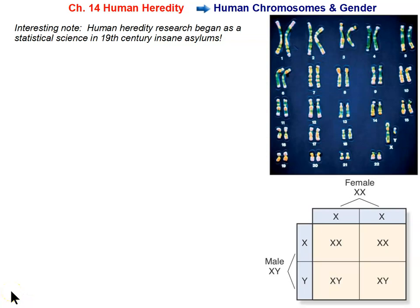This begins our unit on human heredity and biotechnology. We're going to be studying chapter 14, human heredity, before chapter 13, which is biotechnology, because a lot of biotechnology is based on the human genome and human genetics. A lot of this information at the very beginning is review of things we have investigated before, because I used human heredity examples when we were studying genetics with Mendel and his peas.